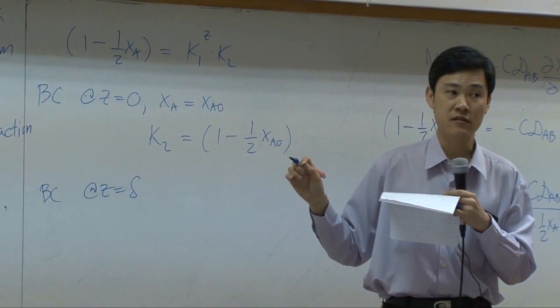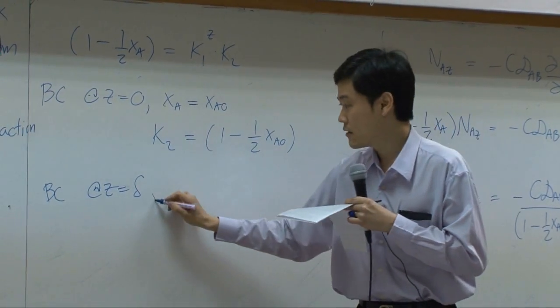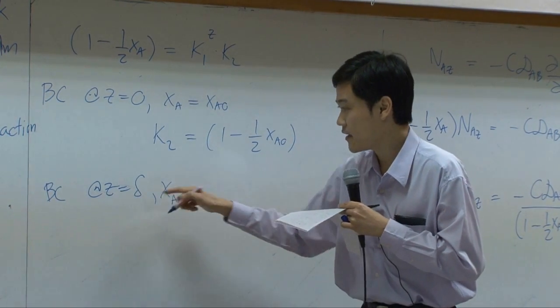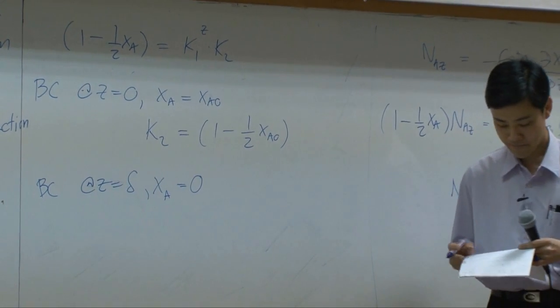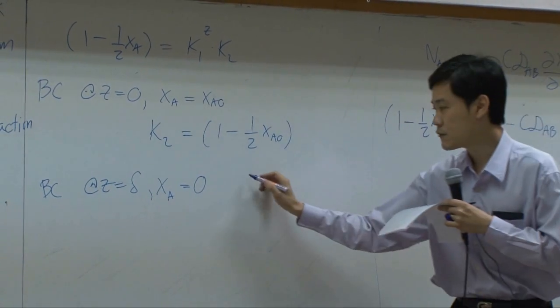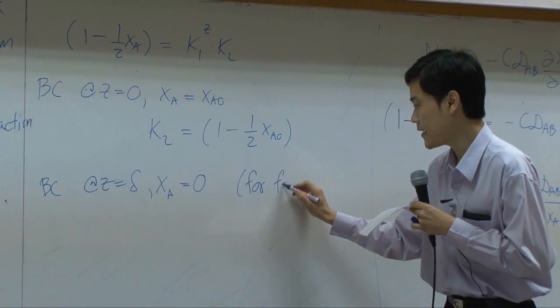If you assume that the rate of reaction is extremely fast, then XA at the surface becomes 0. This one for fast reaction.